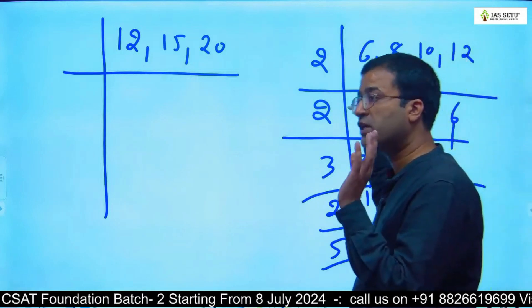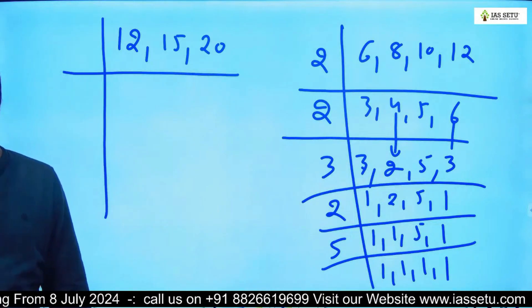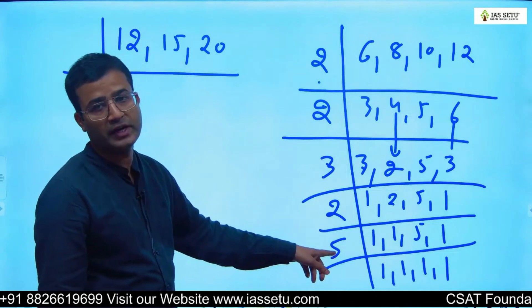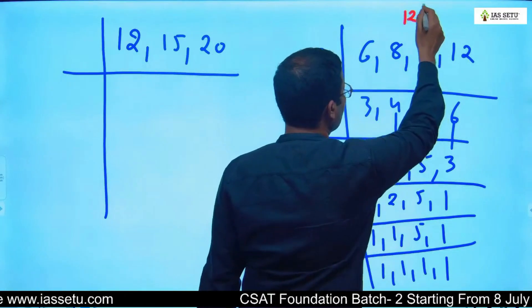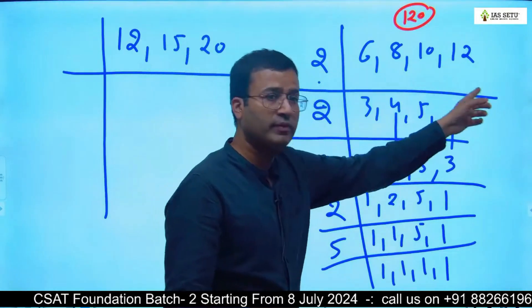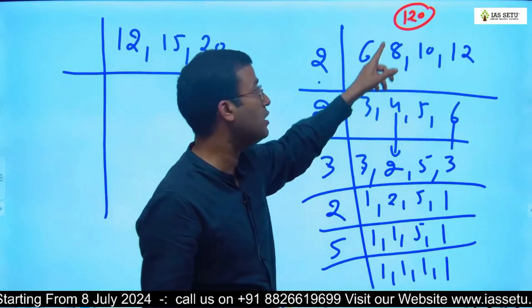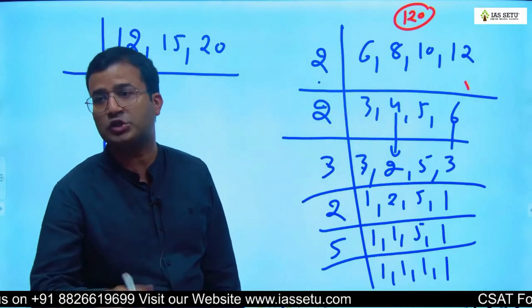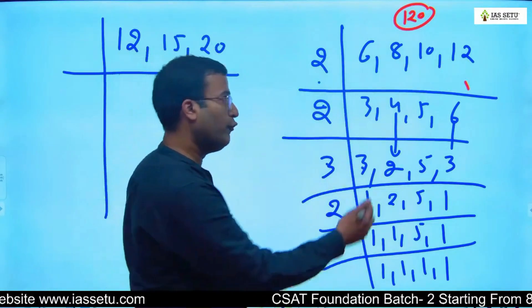I repeat: First preference is if it's a common factor from all the numbers, if available. Otherwise, if it's common from 3 numbers or 2 numbers, still take it. Then you multiply: 2 × 2 = 4, 4 × 3 = 12, 12 × 2 = 24, 24 × 5 = 120. So what is the LCM of 6, 8, 10, and 12? 120. And what is 120? 120 is a multiple of all the numbers. 120 is a common multiple of all these numbers. And 120 is the least common multiple of these four numbers.